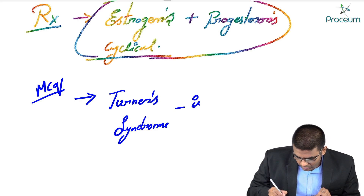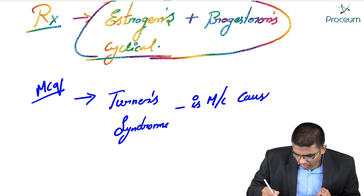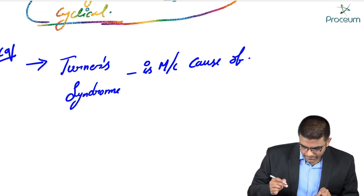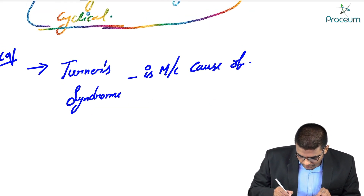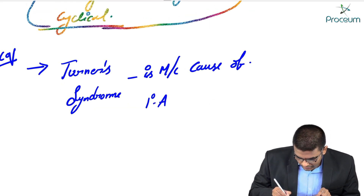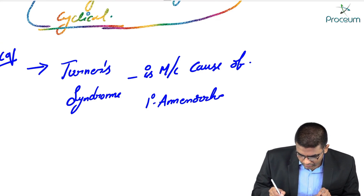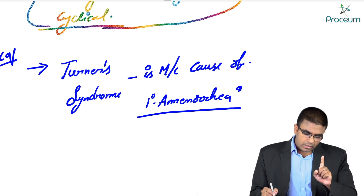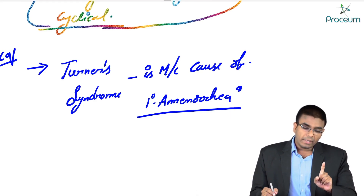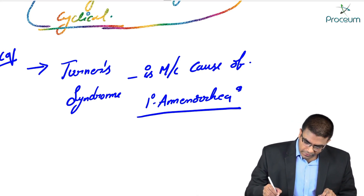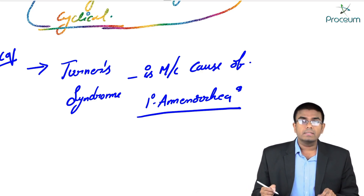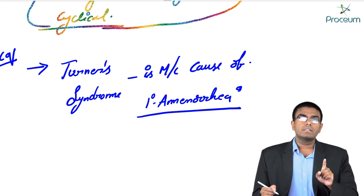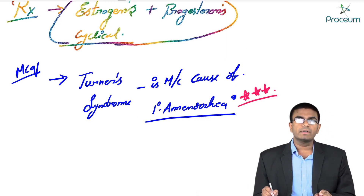A very important MCQ from an exam point of view which you should never forget: Turner's syndrome is the most common cause of primary amenorrhea. The most common cause of primary amenorrhea in a female is Turner's syndrome. Topic completed, thank you.